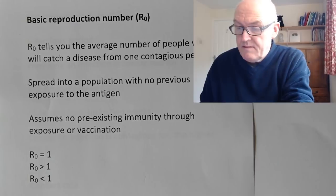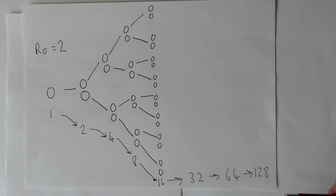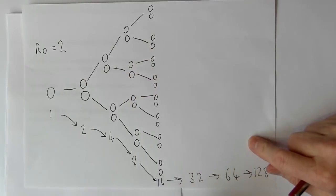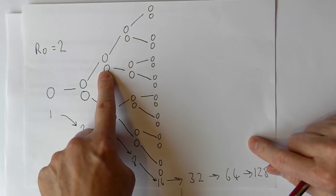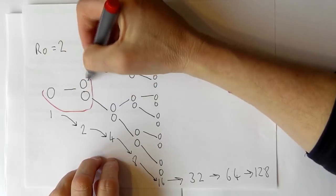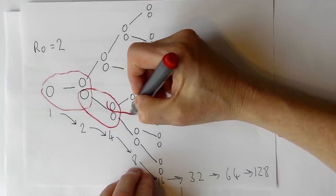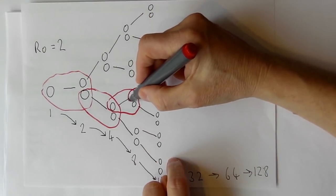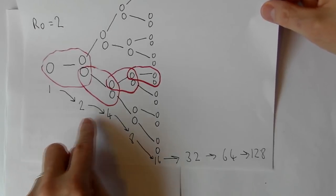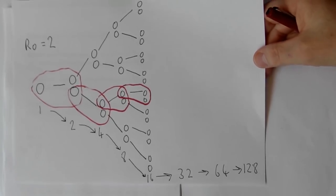Let's look at a practical example. If the R0 of an infection is two, we start with one infected person who on average infects two more people. Those two each infect two more, and so on. So the numbers go from one to two to four to eight to sixteen to thirty-two to sixty-four to 128 infected cases. That's the exponential growth when R0 equals two.